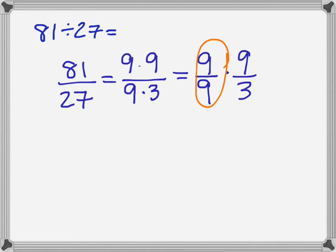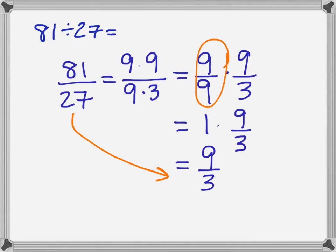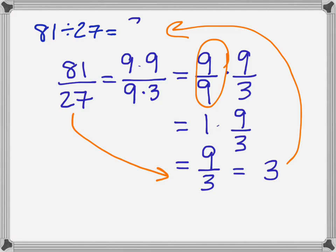The 9 over 9 equals 1. The identity property tells me that 1 times 9 thirds equals 9 thirds. Since 81 over 27 equals 9 thirds, and 9 thirds equals 3, that must be the answer to the original problem as well. So 81 divided by 27 is equal to 3.